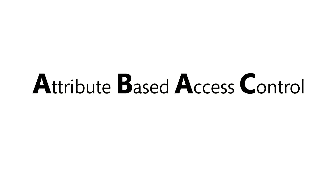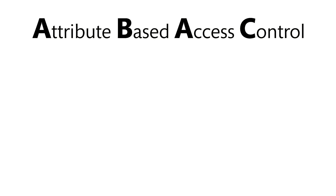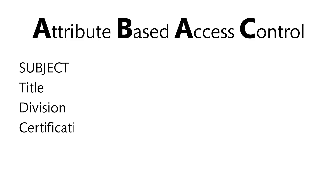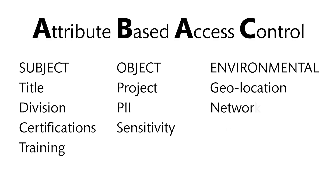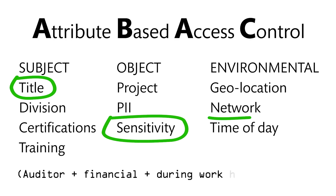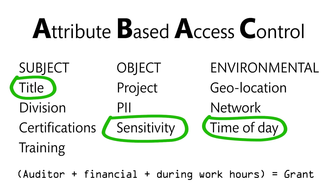With ABAC, access is assigned based on attributes or characteristics about the subject making the access request, about the file or resource object being requested, and environmental conditions. Granular policies can then be established on a combination of these attributes to grant or deny access.